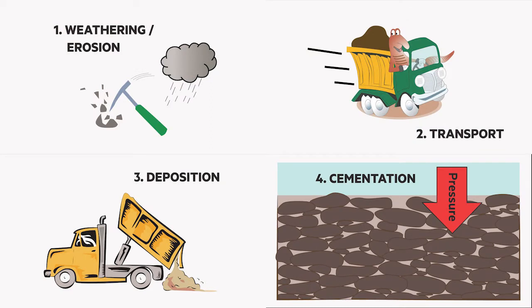Sedimentary rocks are made when sand, mud, and pebbles get laid down in layers. Over time, these layers are squashed under more and more layers. Eventually, the layers turn to rock. Sedimentary rocks can be formed in deserts, lakes, rivers, and seas. There are four parts in the process of sedimentary rock formation, and we're going to learn movement for each part.